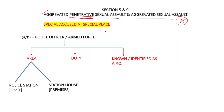Special accused at a special place — that means a person is in some position of authority. In clause A and clause B, there is a police officer or armed force personnel. If such a person commits an aggravated penetrative sexual assault under section 5, or aggravated sexual assault under section 9 — whether at a police station, within their jurisdiction, or while on duty — then it falls under section 5 or section 9.